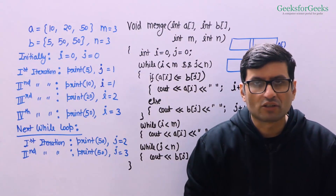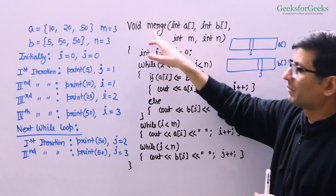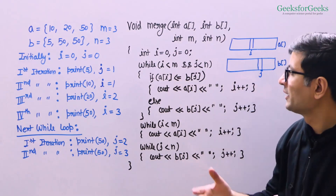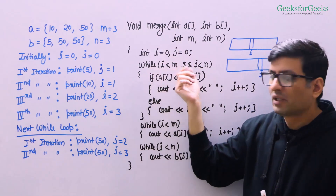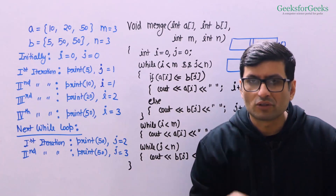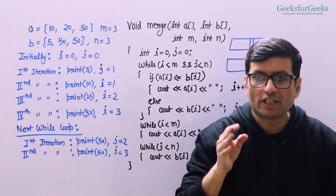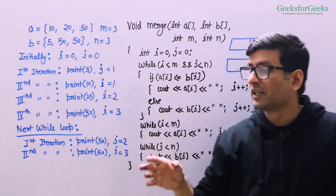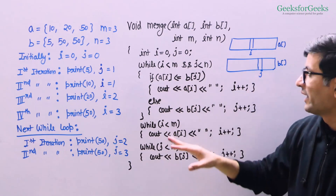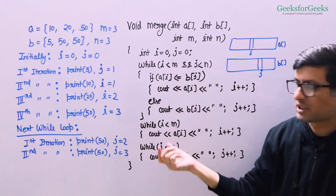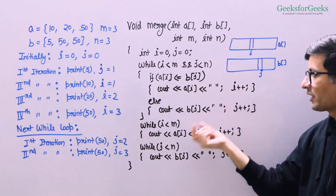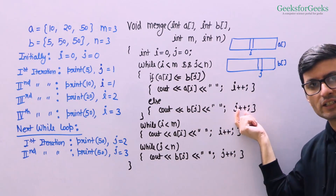Here is the complete implementation of the algorithm. We have written a merge function that takes arrays A and B and lengths m and n as four parameters. We initialize i and j to zero. We run a loop while i is smaller than m and j is smaller than n — we want to exit the loop as soon as we reach the end of either array. Inside the loop: if a[i] is smaller than or equal to b[j], we print a[i] and move ahead in array A; otherwise we print b[j] and move ahead in array B.